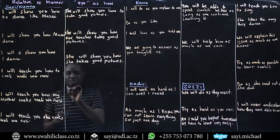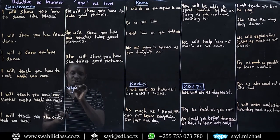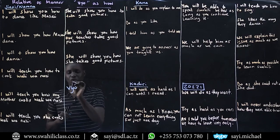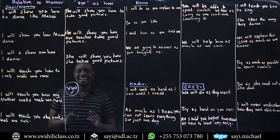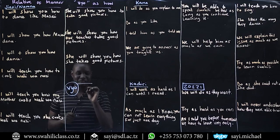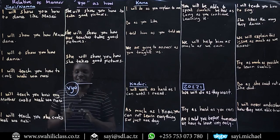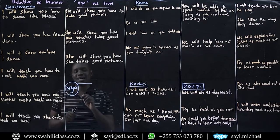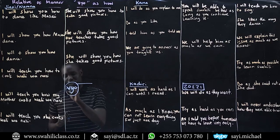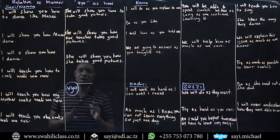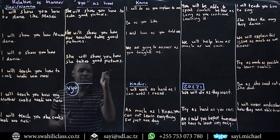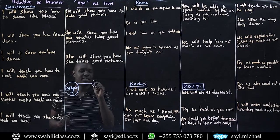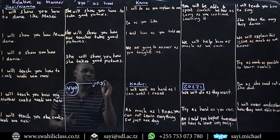I want to tell you, my friend, we are going to learn vio. But this vio has three friends — rafiki. Vio ana rafiki wa tatu. Rafiki wa kwanza ni jinsi o namna.